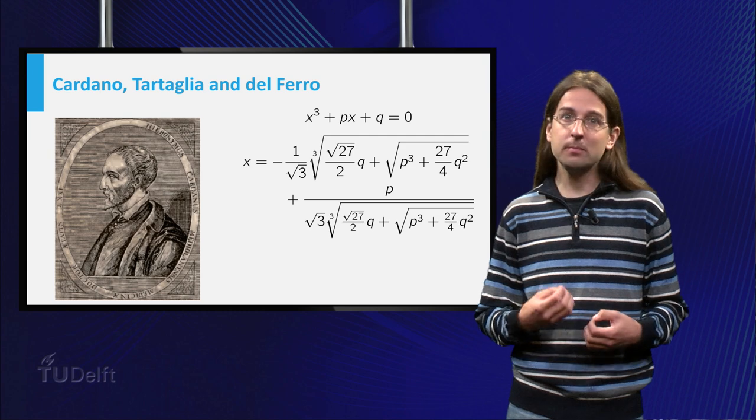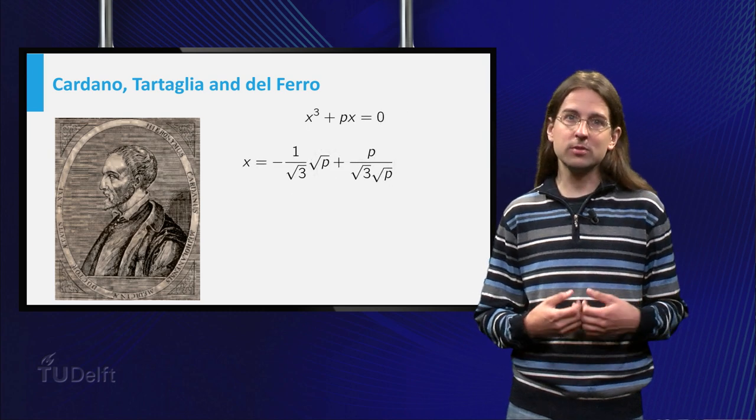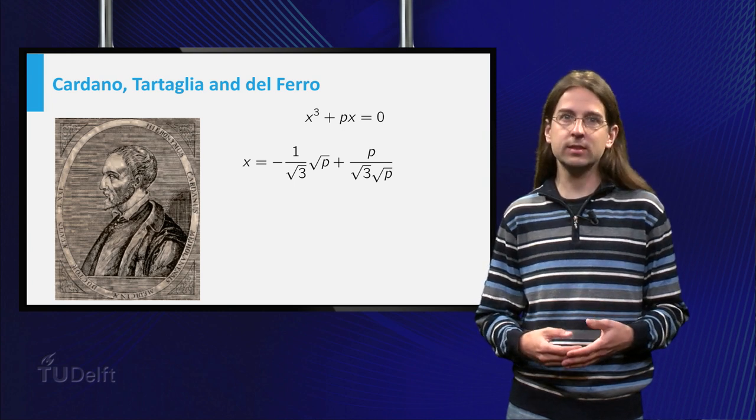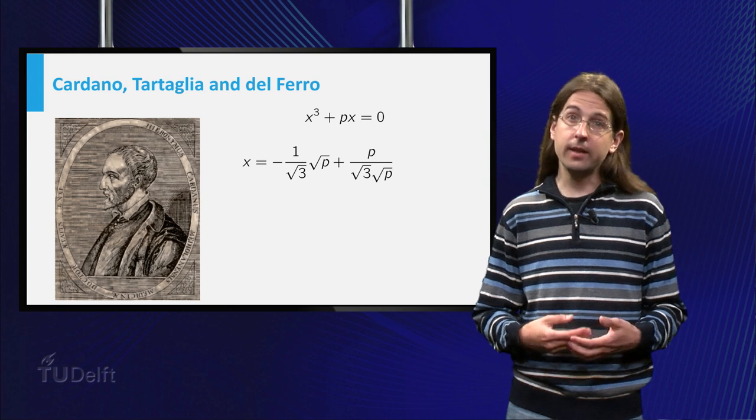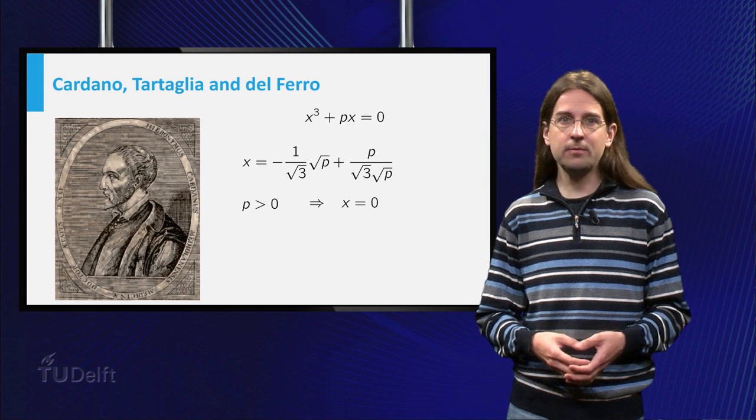Let us simplify it a bit by setting q equals zero. The equation becomes x³ + px = 0, so x equals zero is always a solution. And as long as p is greater than zero, the formula indeed evaluates to zero.